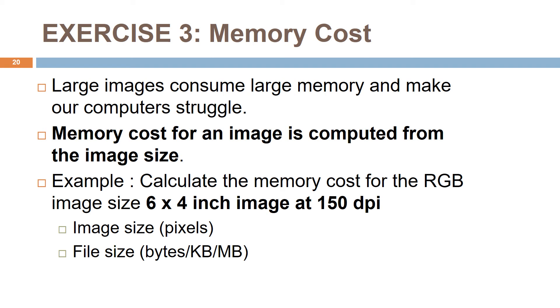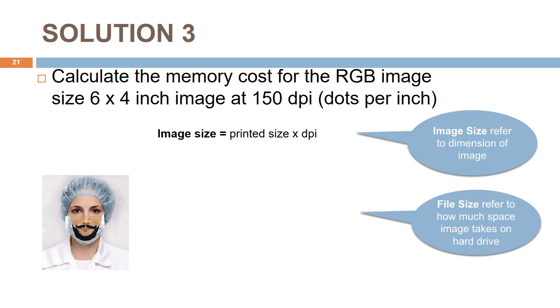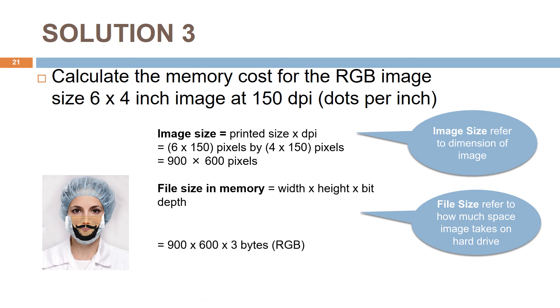Next, calculate the memory cost. We have learned this in the previous video: the file size is determined by width, height, and color bit depth. Since this is an RGB color image, RGB color is 24 bits or equals 3 bytes. Remember that 1 kilobyte equals 1024 bytes. So the total memory cost for this image is 1.5 megabytes.